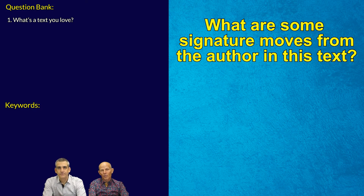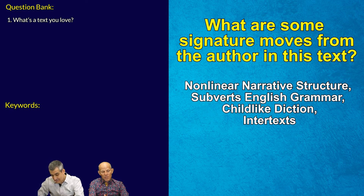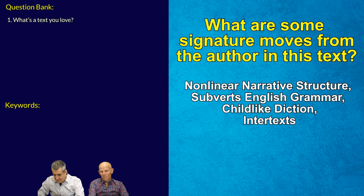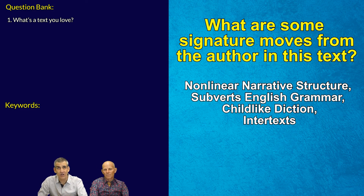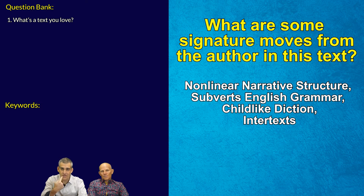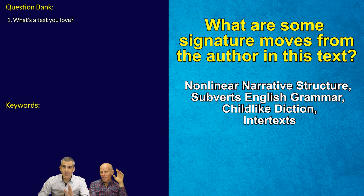This is what's so creative about this novel. First of all, we see a nonlinear narrative structure. We also see the way she subverts the English language — she changes the rules of grammar, punctuation, and capitalization. And she uses childlike diction: a childlike narrative perspective using language so we can see that events are seen through the eyes of a child. That's a really interesting signature move.